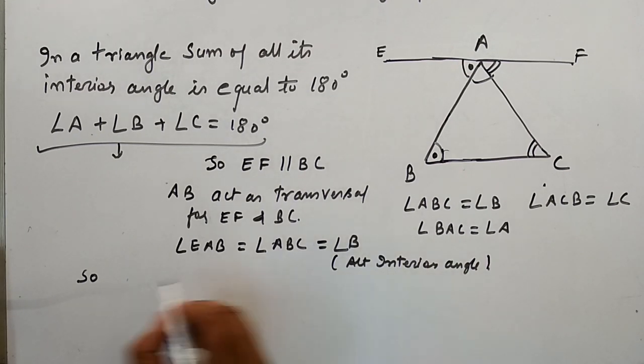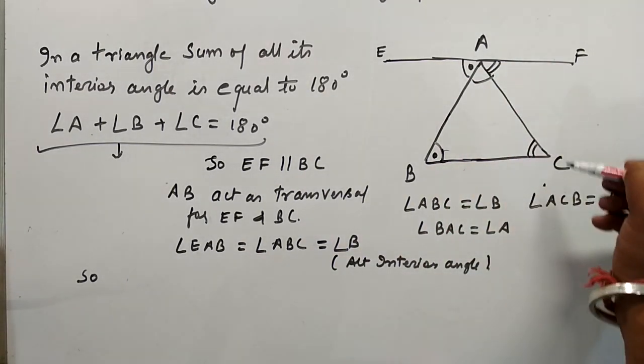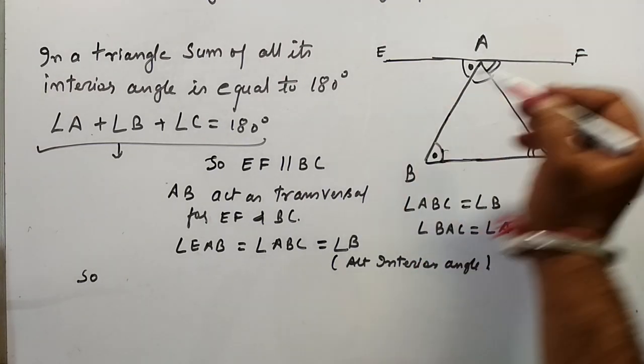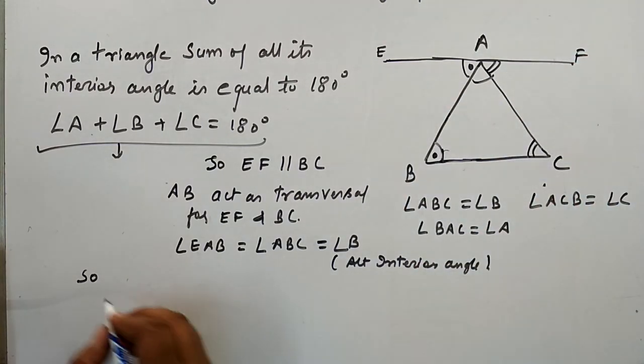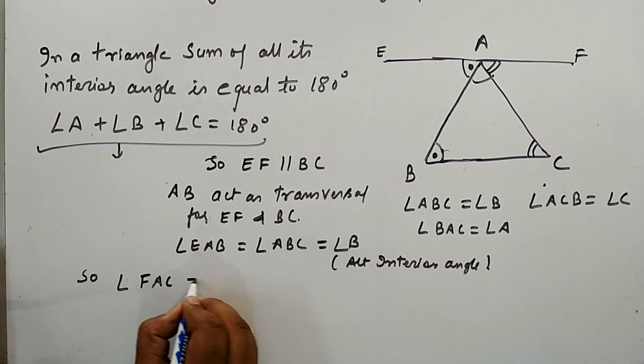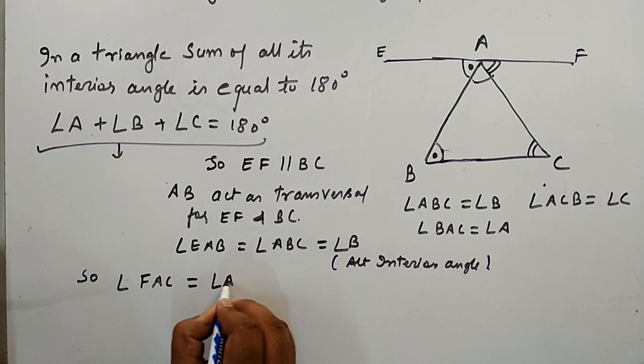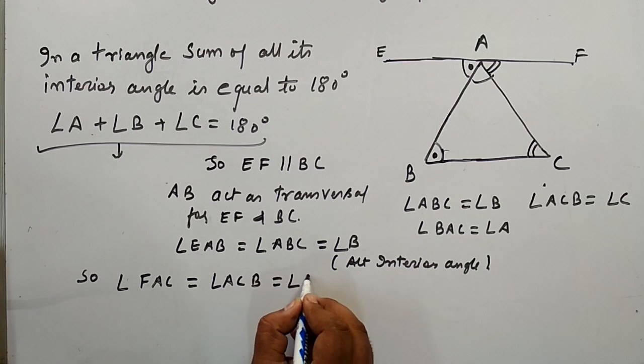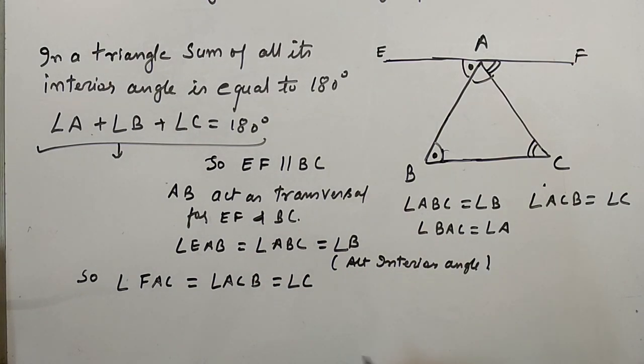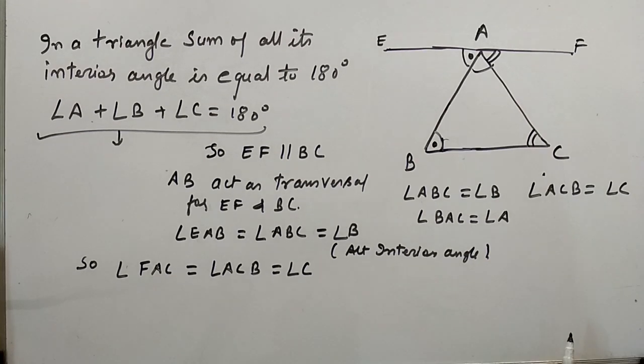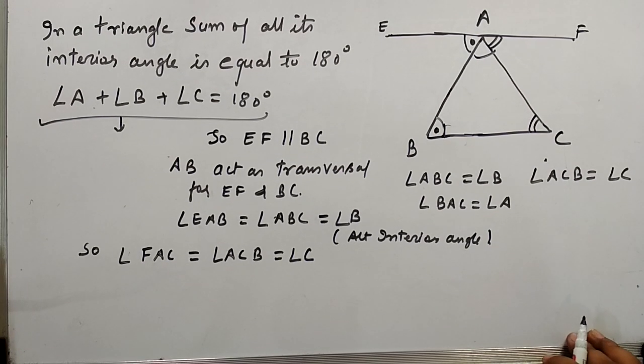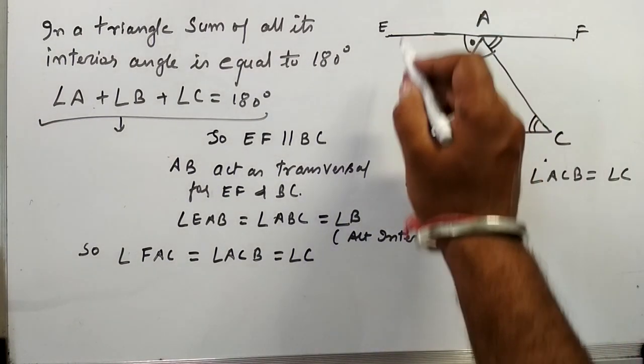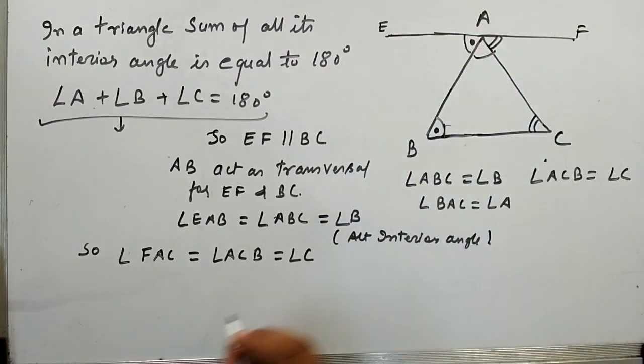So this AC is also acting as transversal for EF and BC. So this angle FAC is also equals to angle ACB, which is equals to angle C.